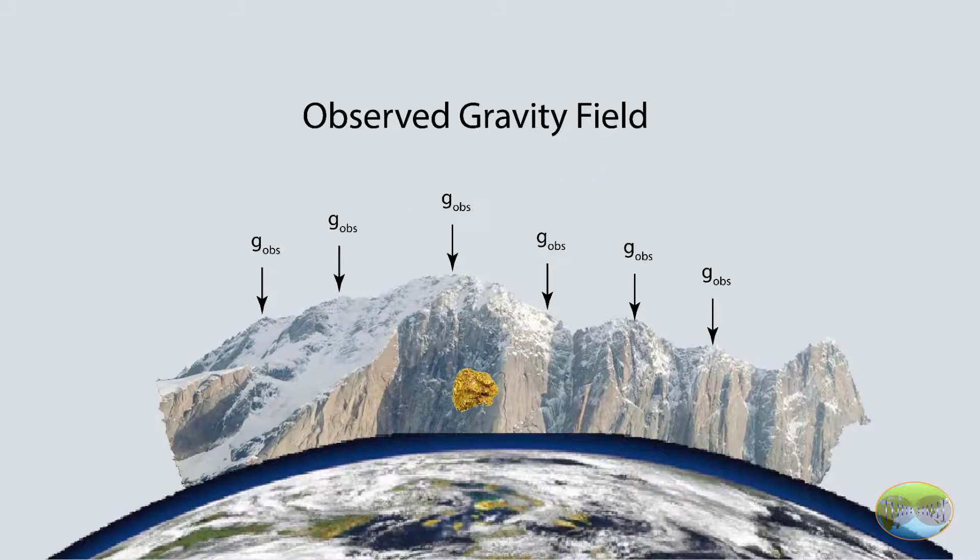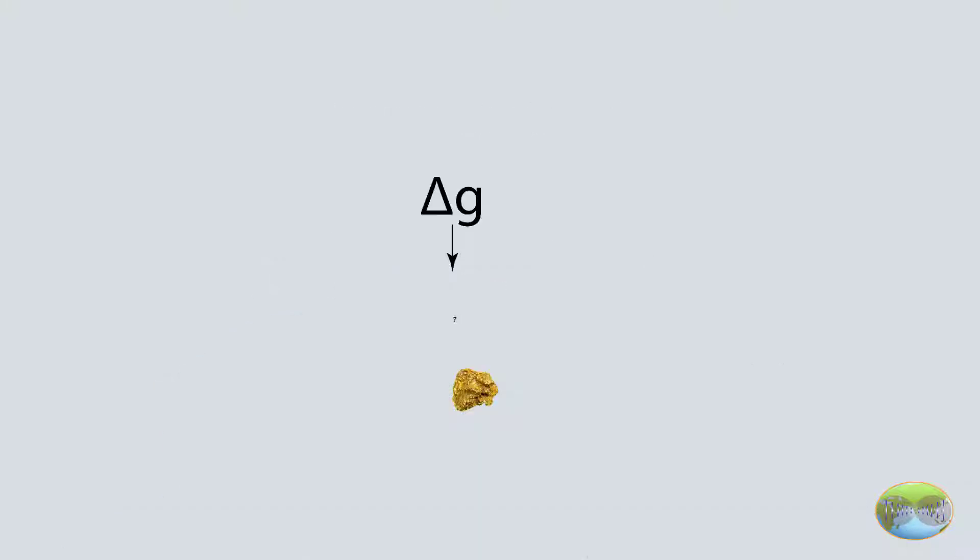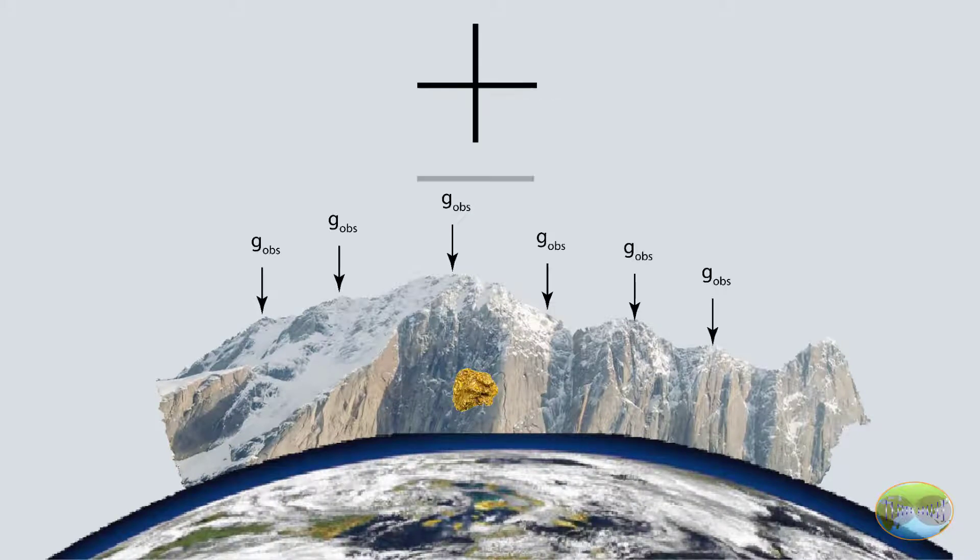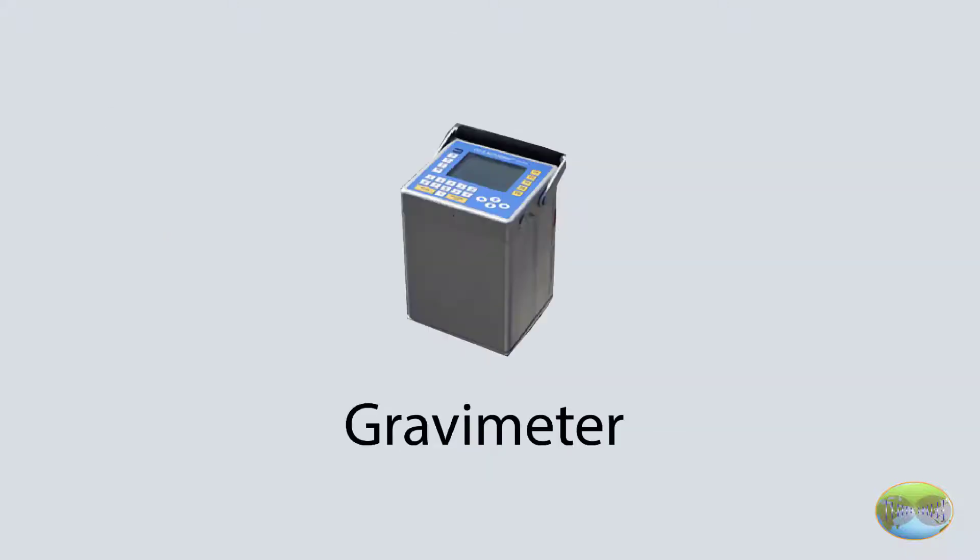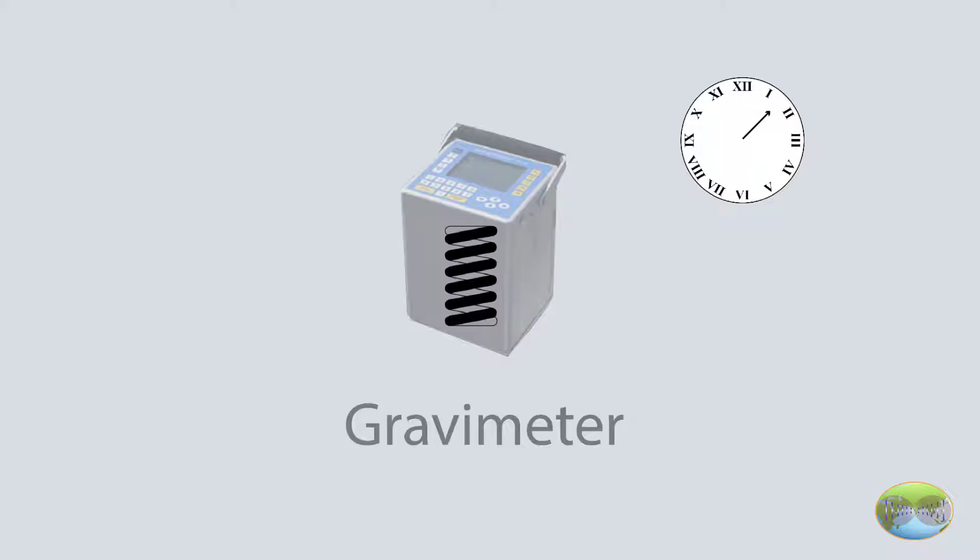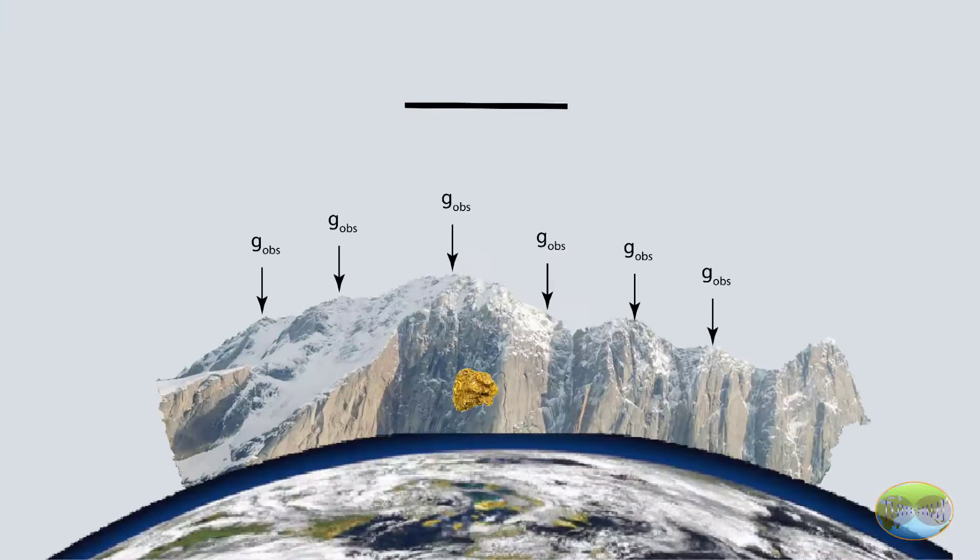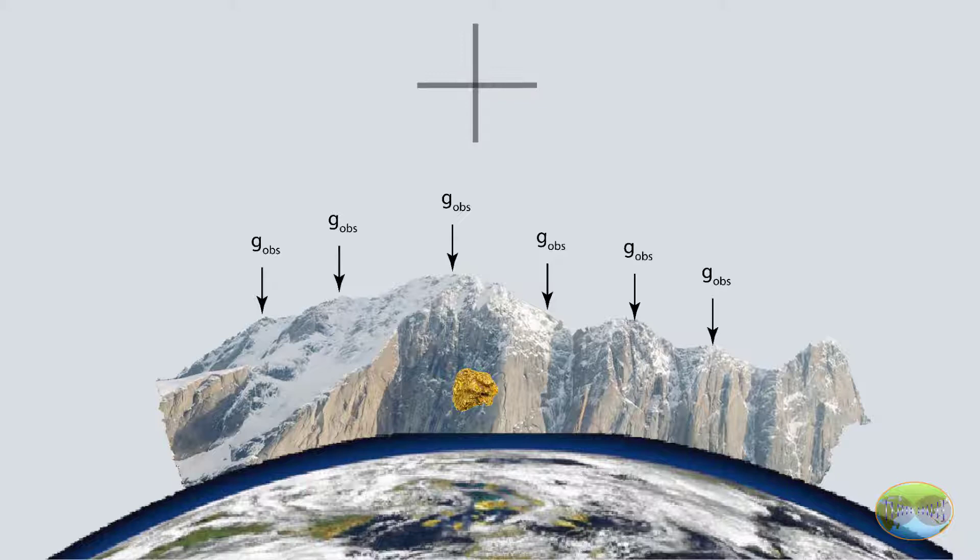We successfully found out the absolute gravity values over our survey area. To find the anomalous field that is generated by the density contrast body only, certain corrections have to be applied. In the last video when I told you that we base corrected the data, we actually did apply drift correction, which is to nullify the creep of spring inside the gravimeter. Now let's discuss the other corrections which have to be applied.